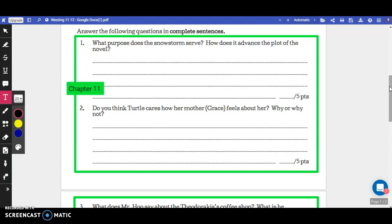More than likely, it's something they couldn't have done. So the snowstorm makes some event possible, and you need to explain what event that is and how it helps the story move along.